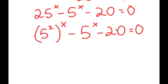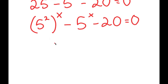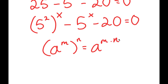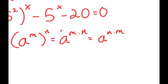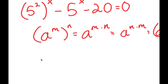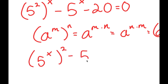Now, if I have something in the form a to the power of m to the power of n, this is the same as a to the power of m times n. And a to the power of m times n I can rewrite as a to the power of n times m. So if a^(mn) equals a^m^n, then a^(nm) should equal a^n^m. Therefore, 5 squared to the power of x equals 5 to the power of x to the power of 2, giving me (5^x)² minus 5^x minus 20 equals 0.